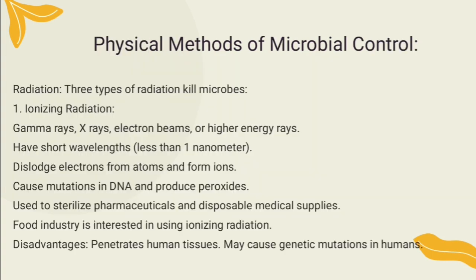Ionizing radiation, such as gamma rays and x-rays, has much more energy and penetrating power than UV radiation. Ionizing radiation ionizes water and other molecules to form radicals — molecular fragments with unpaired electrons that can disrupt DNA molecules and proteins. It is often used to sterilize pharmaceuticals and disposable medical supplies such as syringes, surgical gloves, catheters, sutures, and petri plates. It can also be used to retard spoilage in seafoods, meats, poultry, and fruits.